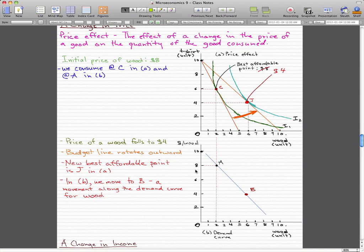And so in B, we move from point A to point B, a movement along the demand curve for wood.